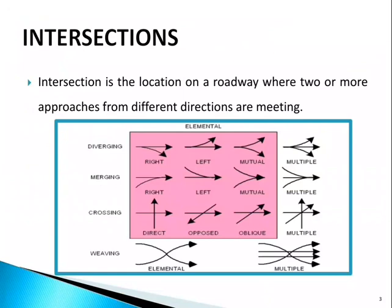In a diverging type intersection, the approaches will move away in the right direction, left direction, or can be mutual at some intersection, and also in multiple ways. In these types of intersections, approaches will diverge from the main approach.